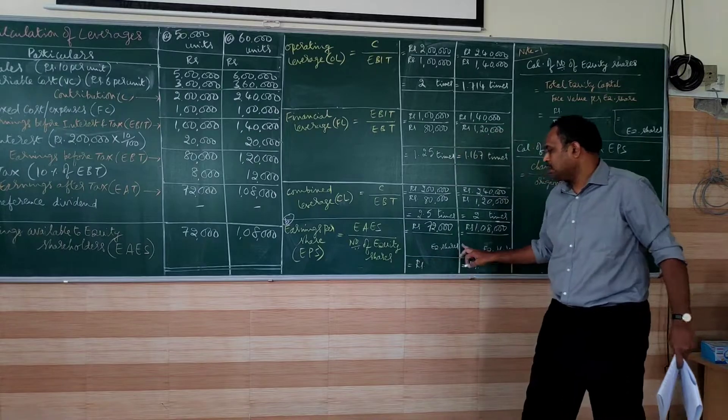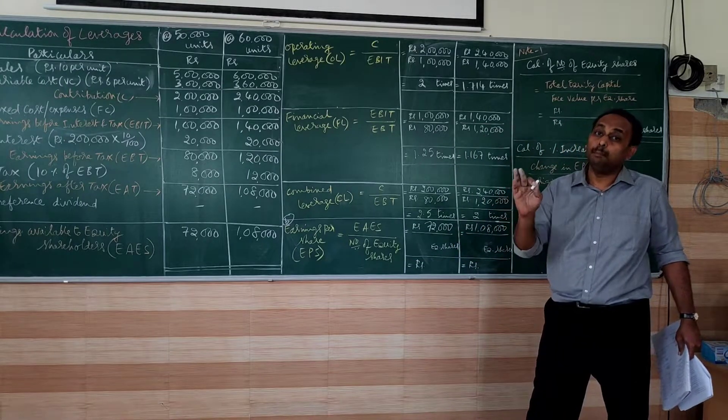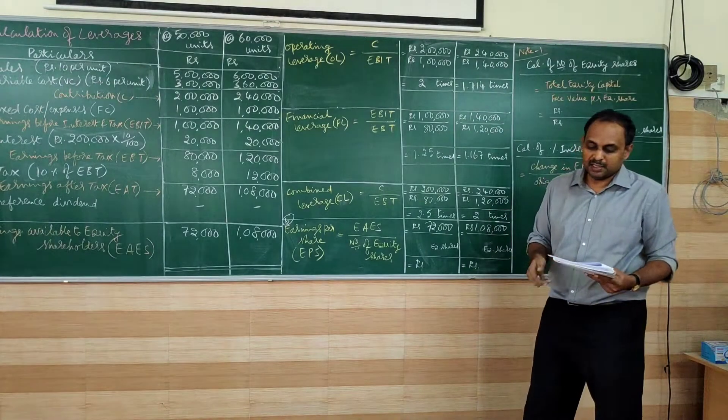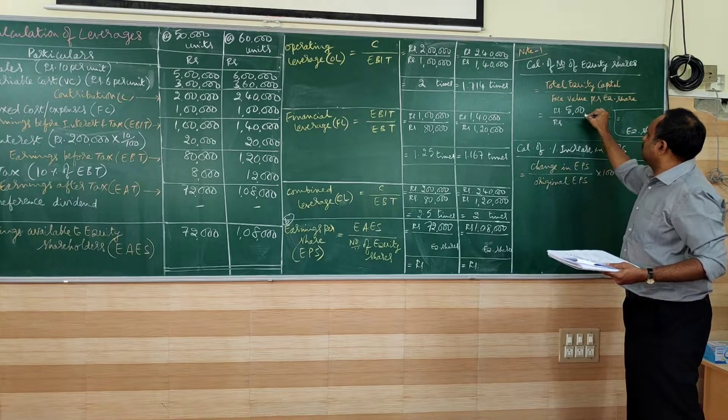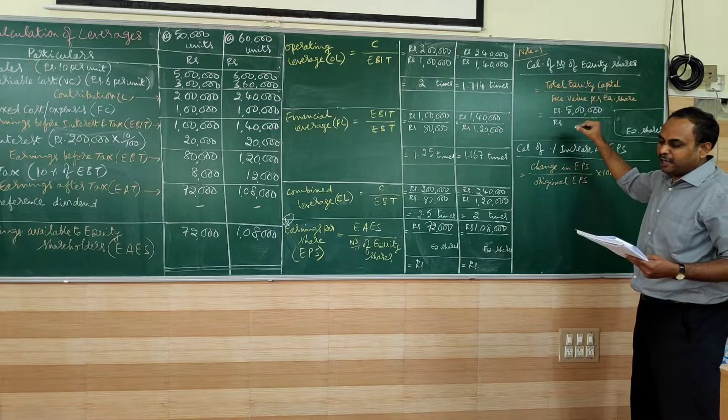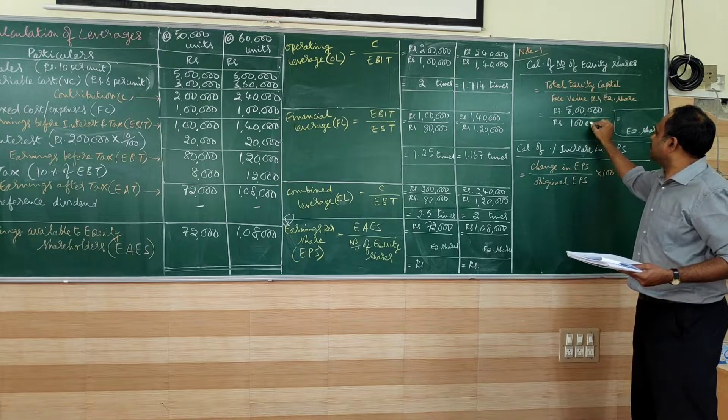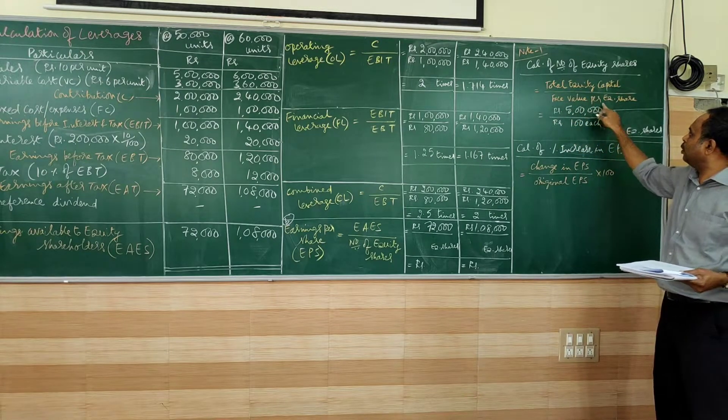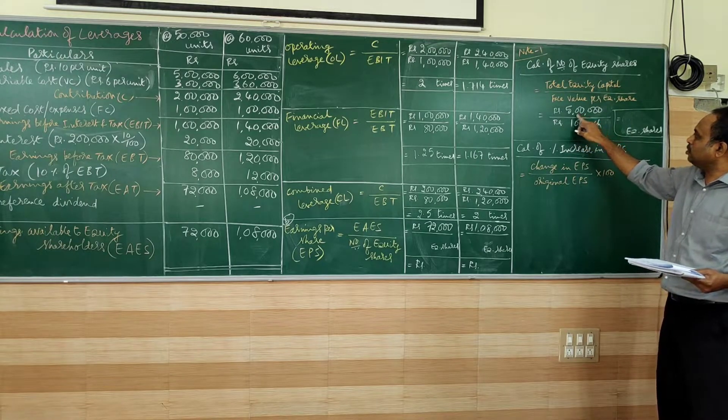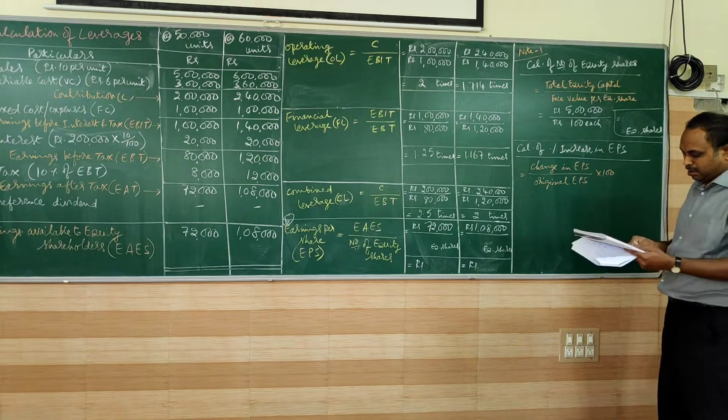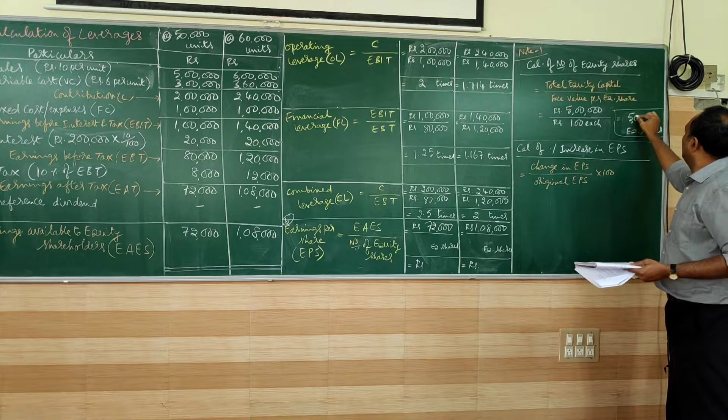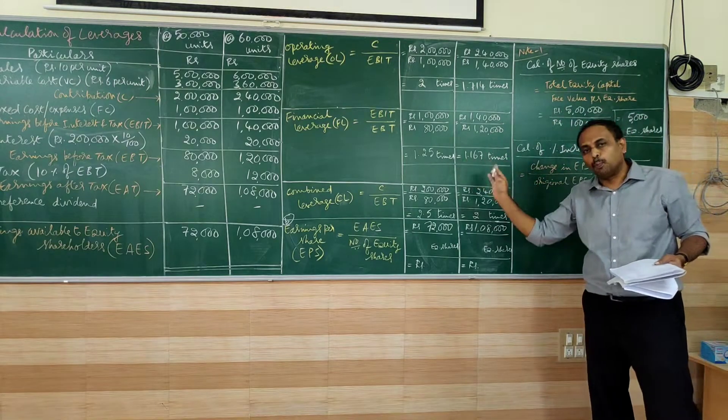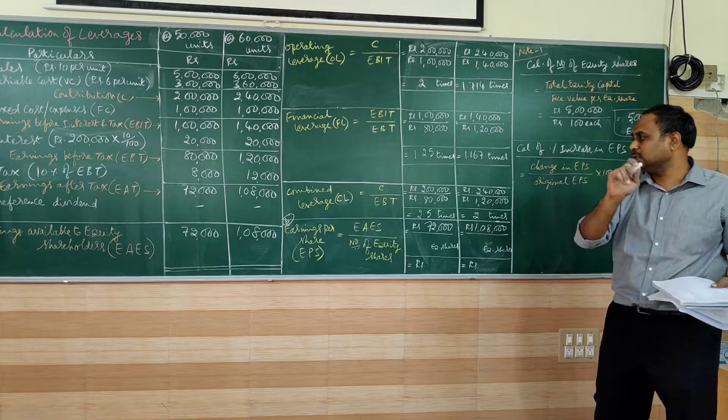Divided by number of equity shares, which is not given straight away in the problem, but we can calculate. They are giving us that the company's capital structure is having rupees 5 lakhs total, divided into shares of rupees 100 each. So total is 5 lakhs, each share face value per equity share is 100 each. So 5 lakhs divided by 100, when you do, you are going to get 5,000 equity shares. So 5,000 equity shares for both situations is not changing. The capital structure remains same.